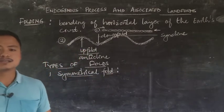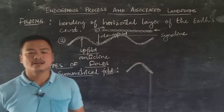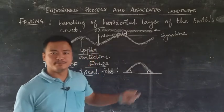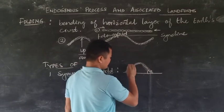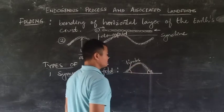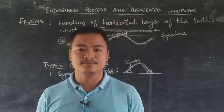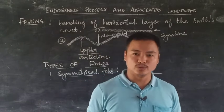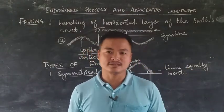The first type is the symmetrical fold. Looking at the diagram, the angle of the fold from the base is equal on both sides. The sides of the fold are called limbs. When the angle of the fold to its base is equal on both limbs, then the fold is known as a symmetrical fold. The limbs are equally bent, and hence we call it a symmetrical fold.